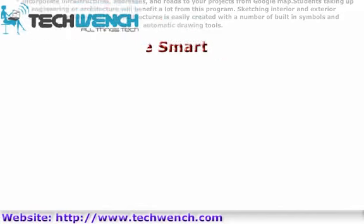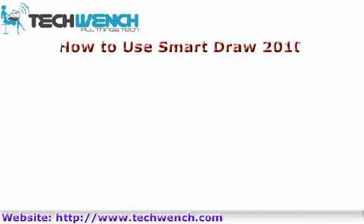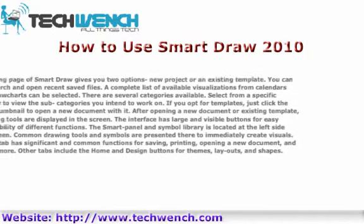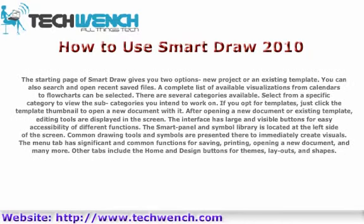How to use SmartDraw 2010: The starting page of SmartDraw gives you two options — a new project or an existing template. You can also search and open recent saved files. A complete list of available visualizations from calendars to flowcharts can be selected. There are several categories available. Select from a specific category to view the sub-categories you intend to work on. If you want templates, just click the template thumbnail to open a new document with it.